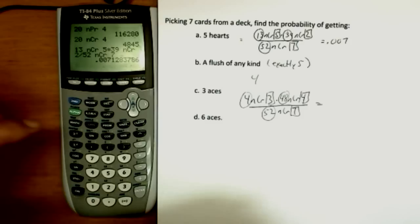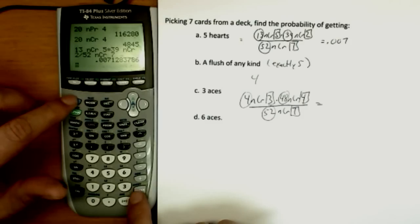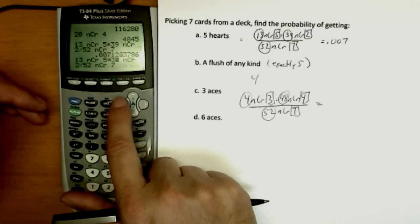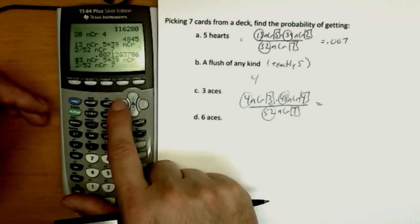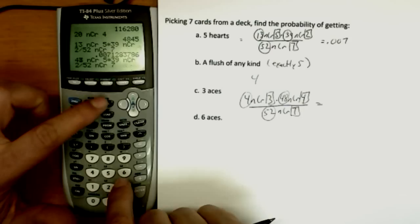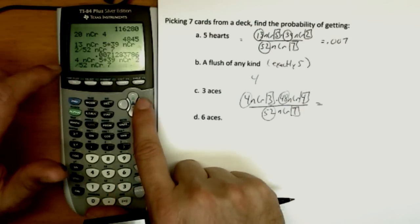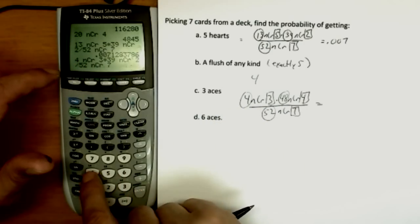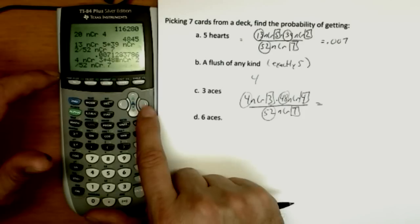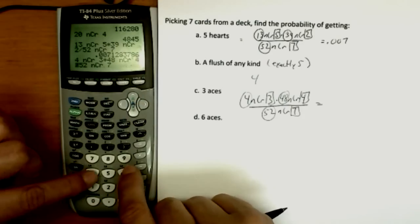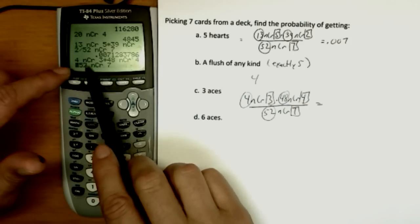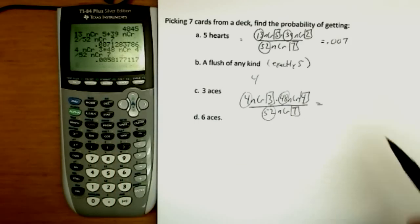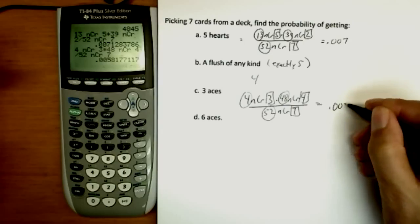And here's a neat trick, particularly if you're taking a test and you've got to do this stuff quickly. Second entry will pull up the last calculation. And I merely need to move around on it, change some numbers. So instead of 13, I want 4. 4 choose 3 times 48 choose 4. Bottom stayed the same. And I hit enter. And I get my new answer, 0.0058.